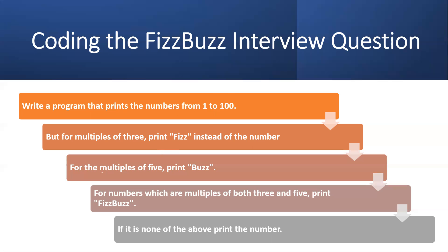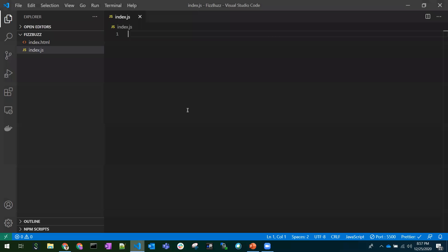The third point: if a number is a multiple of 5 — divisible by 5 — print 'Buzz'. The fourth point: if a number is divisible by both 3 and 5, meaning it's divisible by 15 (3 × 5 = 15), print 'FizzBuzz'. And if a number is not divisible by 3, 5, or 15, just print that number. That's the full problem statement.